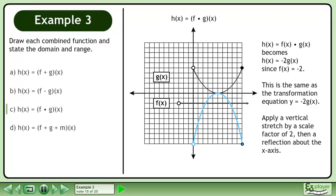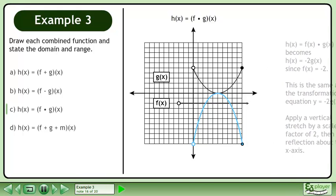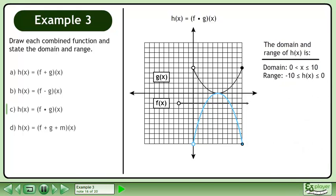h equals f times g becomes h equals negative two g, since f equals negative two. This is the same as the transformation equation y equals negative two g. Apply a vertical stretch by scale factor of two, then a reflection about the x-axis. The domain of h is between zero exclusive and ten inclusive, and the range is between negative ten and zero inclusive.